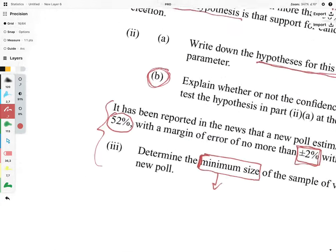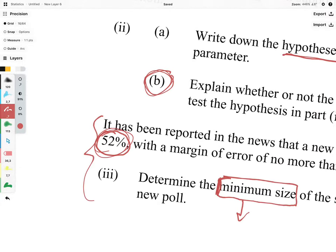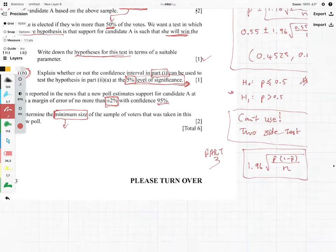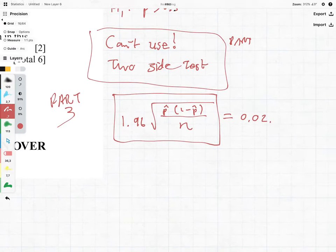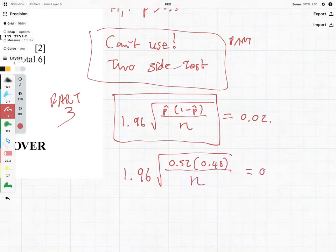Now we have the p and that is 52 percent, so we simply need to plug these in and our unknown is the n. So we have 1.96 times the square root of 0.52 times 0.48, our n is the unknown, which is equal to 0.02, which means we want to get n on its own so it's going to be something like this.